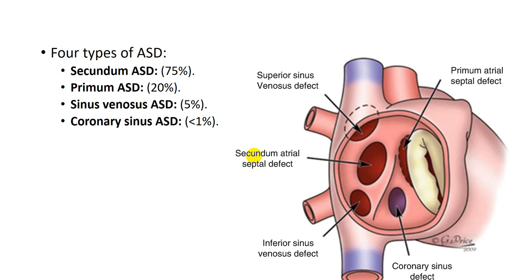The most common type is the secundum ASD, accounting for 75% of ASDs. The defect is in the area of the foramen ovale, usually central. The second most common is the primum ASD, accounting for 20%, located in the lower part of the interatrial septum near the endocardial cushion. The third type is sinus venosus ASD, near the entrance of the SVC or IVC. The least common is the coronary sinus ASD, near the ostium of the coronary sinus. The two most important types are secundum ASD and primum ASD.